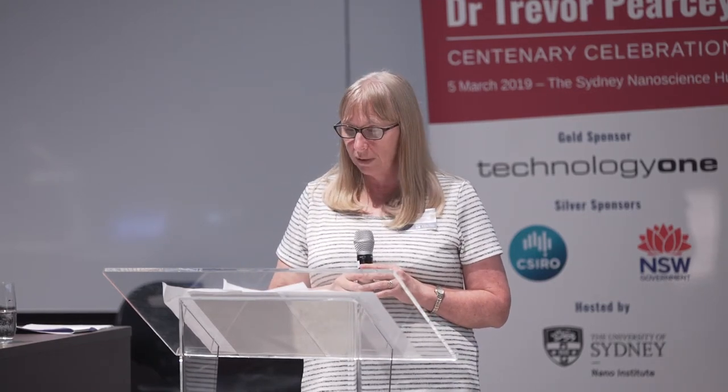After spending about a year in Sydney, Pearcy proposed a radical new idea: that the division should build a computer, even though a modern computer — digital, general purpose, high speed, electronic with stored programming — did not exist at this time. There had been wartime computer developments, but they were often secret and these early machines did not have stored programming. They agreed to Pearcy's suggestion and started work on a computer designated CSIR Mark I.